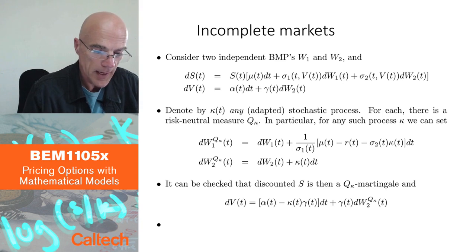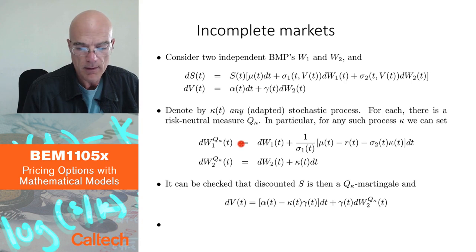So for any process kappa, which doesn't look into the future, so adapted process, you can construct a risk neutral probability Q_kappa. So there is really infinitely many, continuously infinitely many of those for any process kappa.